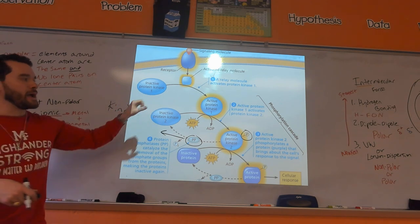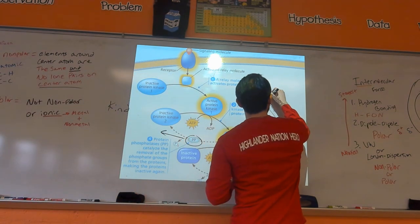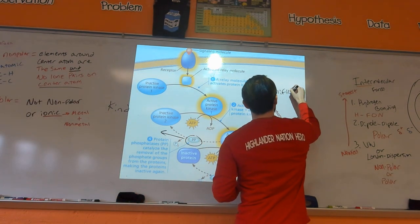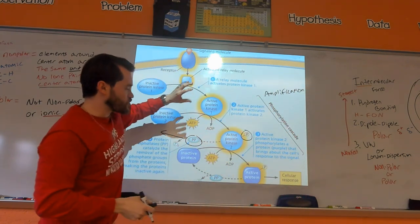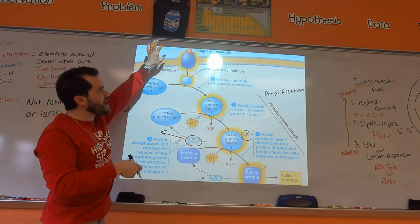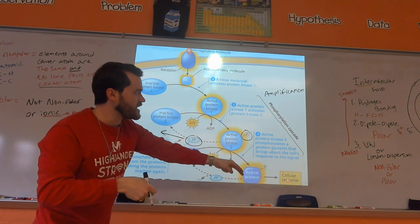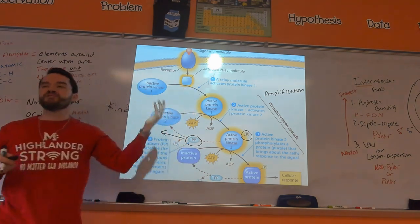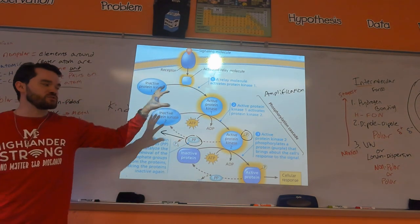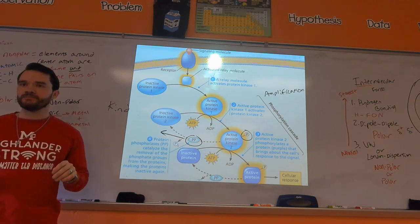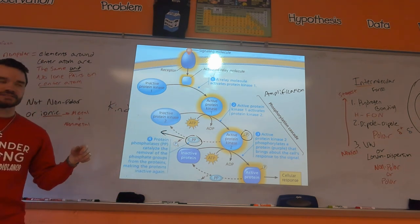The point of the whole phosphorylation cascade is amplification and transmission — transmitting the message from the receptor to the final response, while amplifying it along the way. That's why they call it a cascade — it's like a snowball effect.